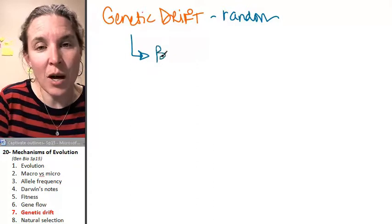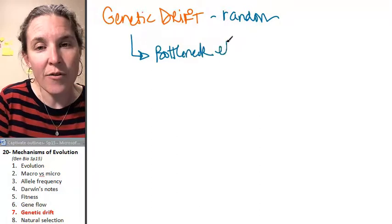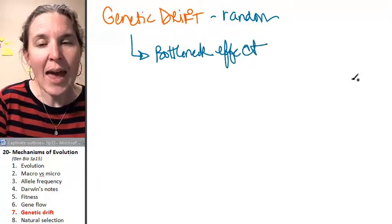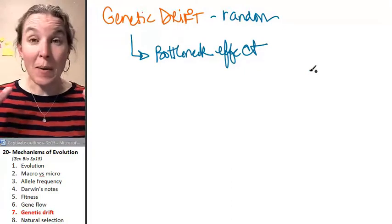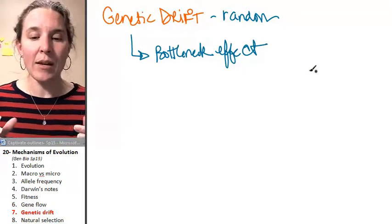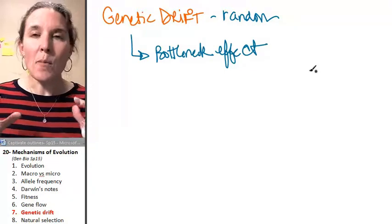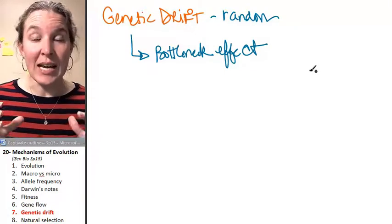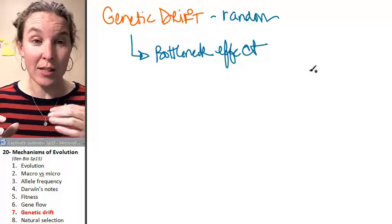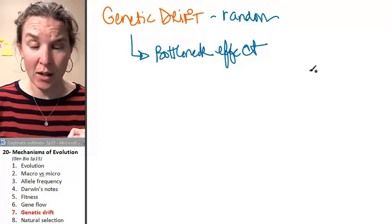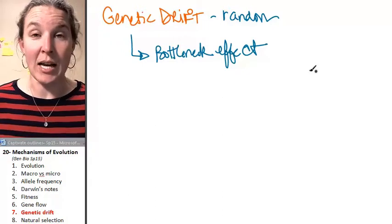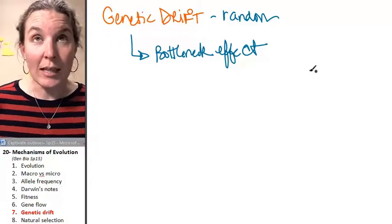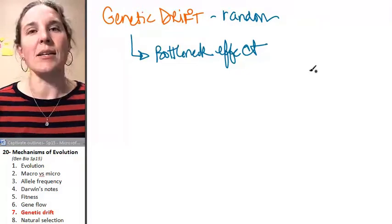There's a phenomenon called the bottleneck effect. I'm going to give you this example. So you have a population of critters and some random disaster takes place. I'm not using my house as an example anymore because my kids already left me and I'm a grandma, so I really don't need any kind of random disasters in my house. So let's imagine a population of cheetahs.